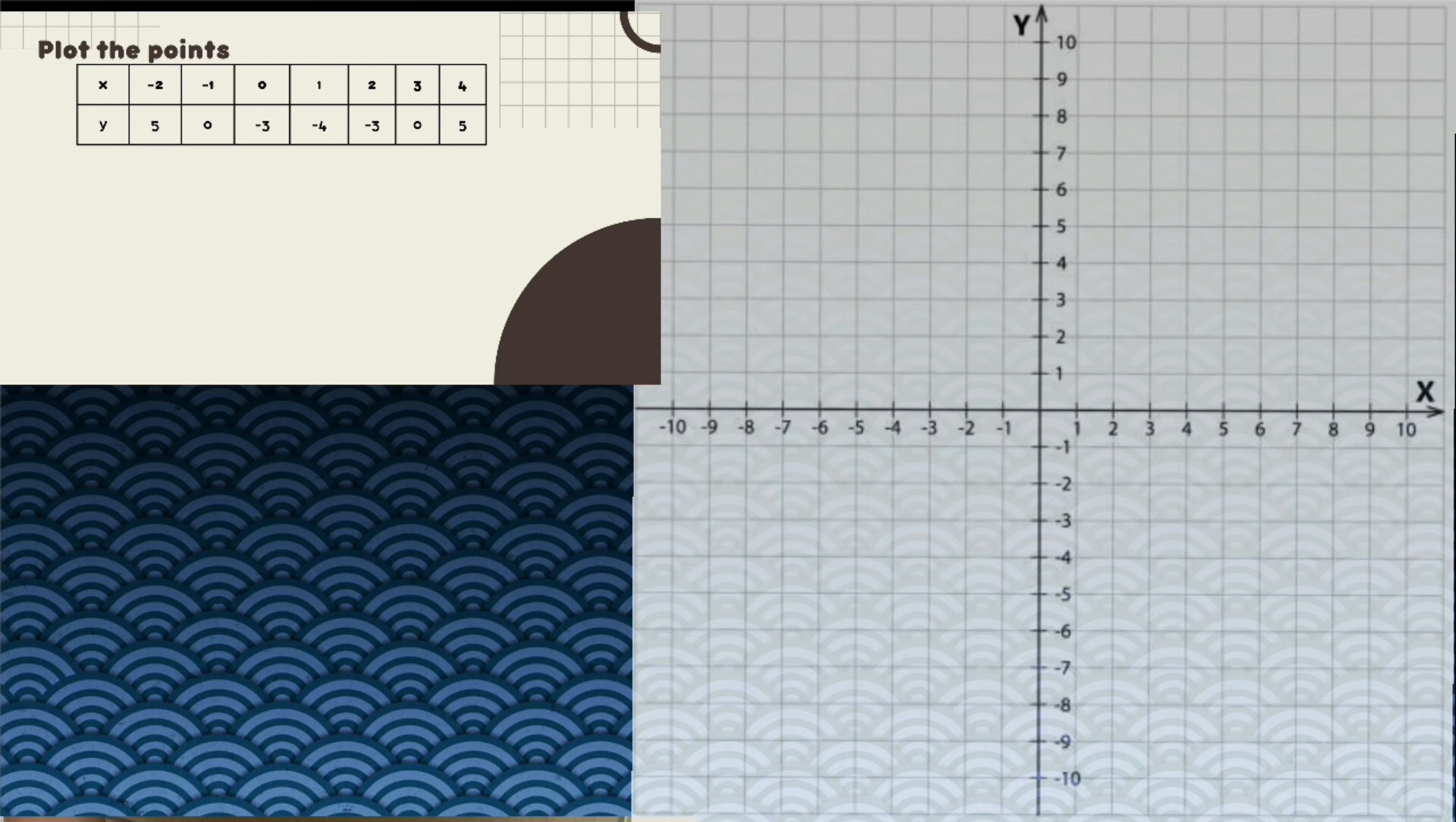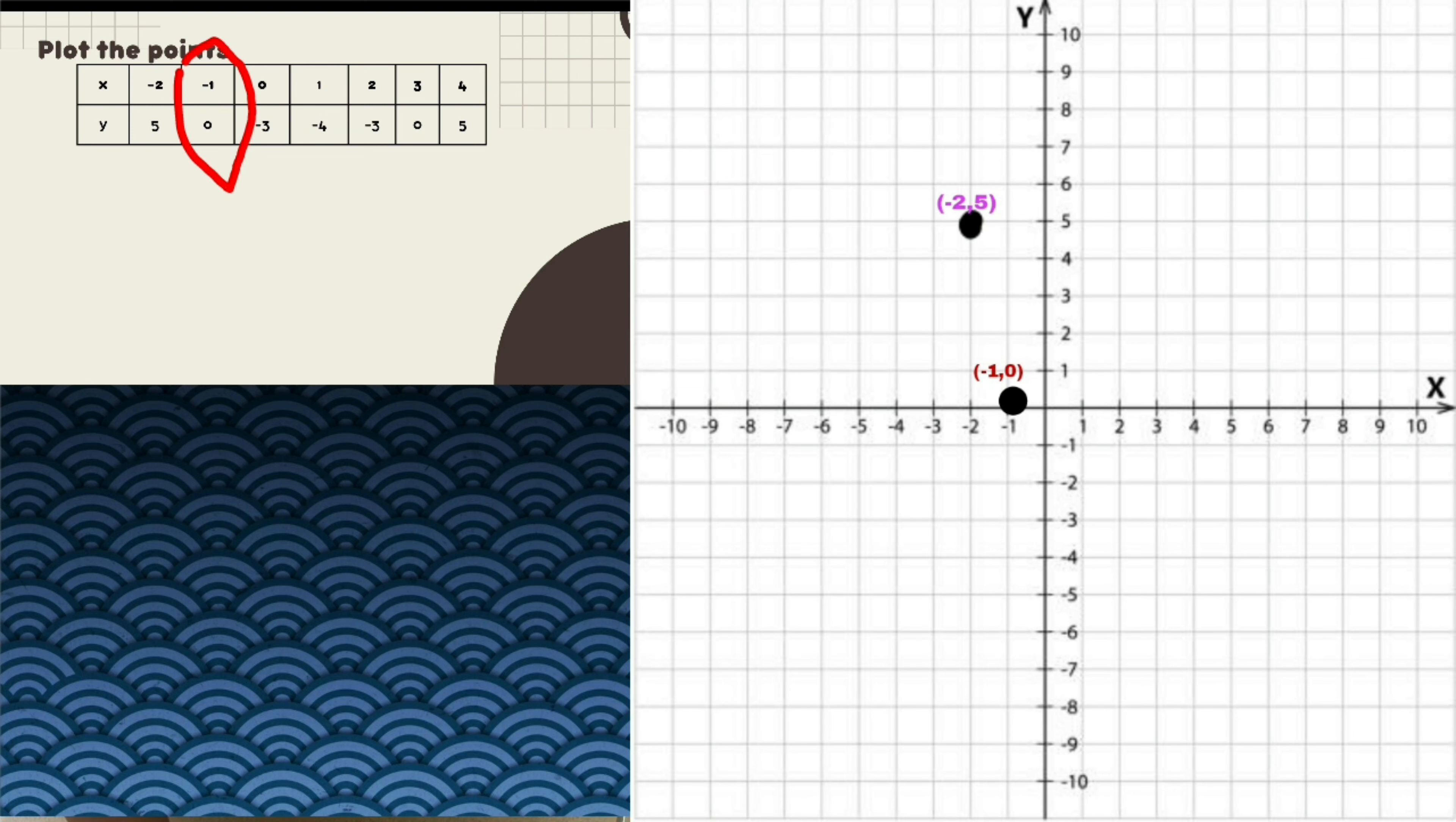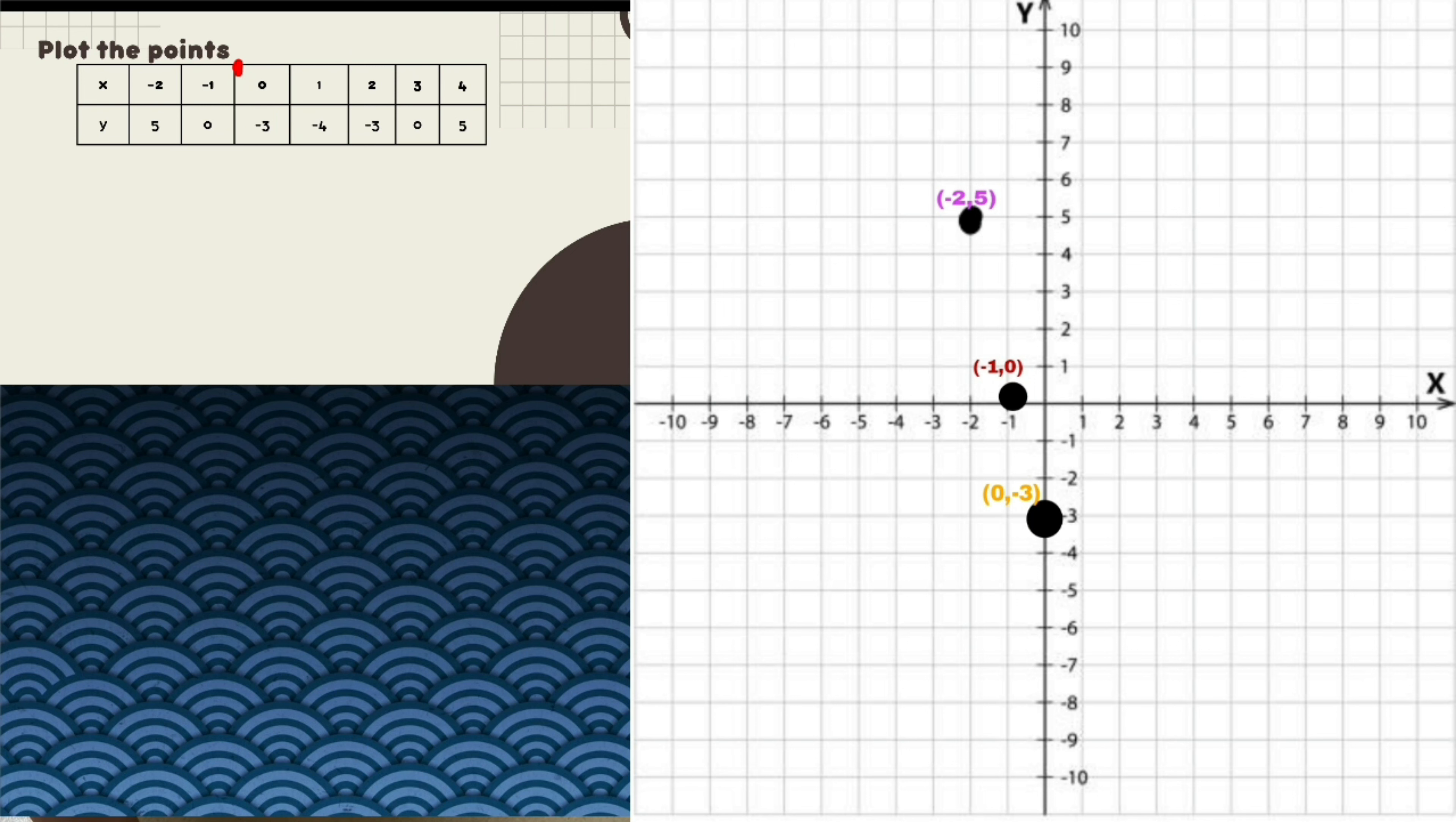So the first we'll plot is negative 2 and 5. So this will be in quadrant 2. Next is negative 1 and 0. This is plotted here because our x is negative 1 and our y is 0. So this is plotted here.